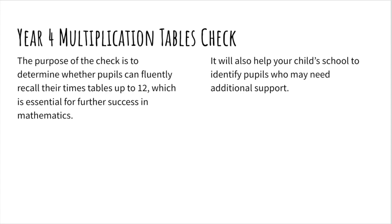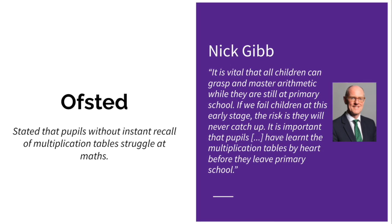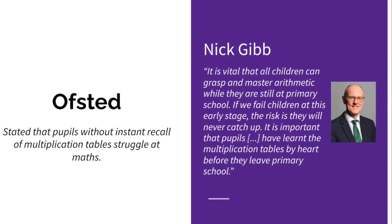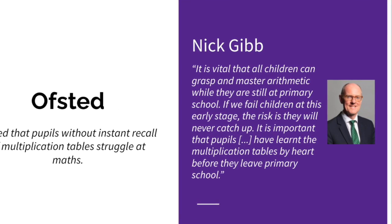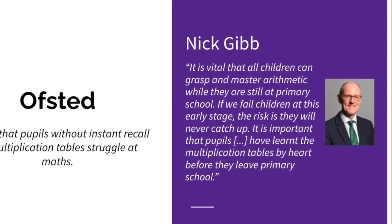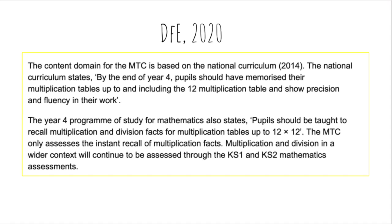The purpose of the check is to determine whether pupils can fluently recall their times tables up to 12, which is essential for further success in mathematics. It will also help your child's school to identify pupils who may need additional support. Ofsted have stated that pupils without instant recall of multiplication tables struggle at maths. Nick Gibb, the schools minister, has also said that it is vital that all children can grasp and master arithmetic while they are at primary school.